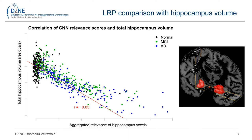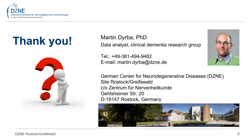This information helps us to assess whether the model learned to consider plausible image features or if it is sensitive to noise.